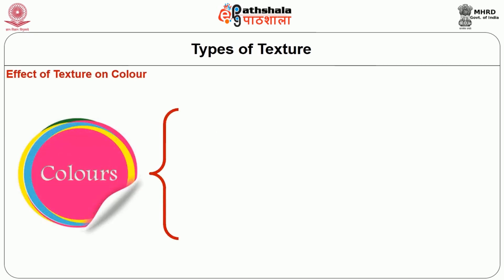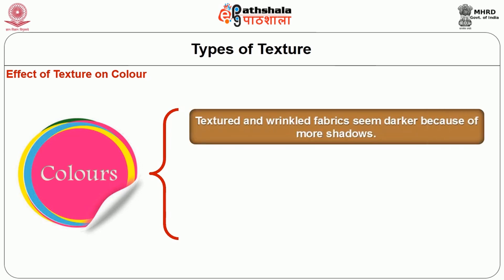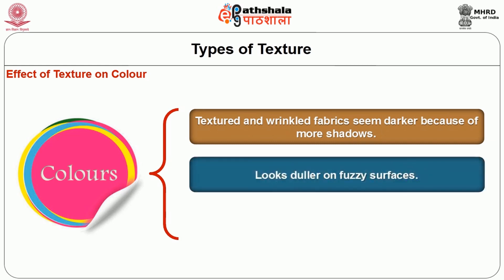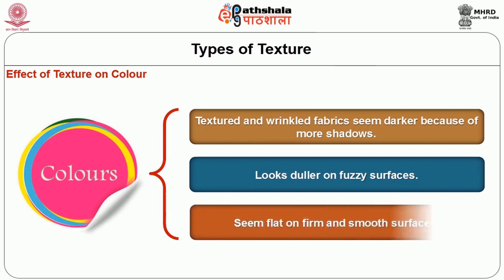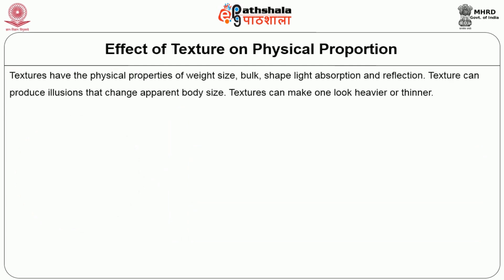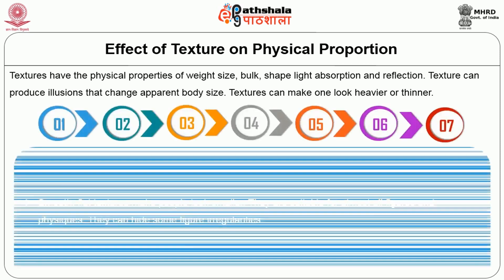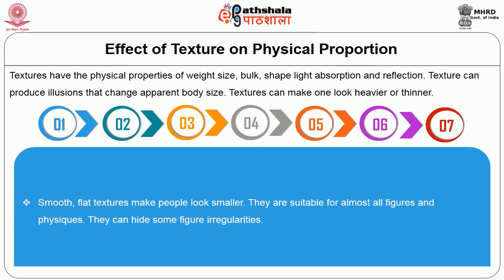Colors also change the texture of the fabric. Colors from textured and wrinkled fabrics seem darker because of more shadows. Colors on fuzzy surfaces look duller. Colors on firm and smooth surfaces seem flat. Now let us see the effect of texture on individual physical proportions. Textures have the physical properties of weight, size, bulk, shape, light absorption and reflection. Textures can produce illusions that change apparent body size. Textures can make one look heavier or thinner. Smooth and flat textures make people look smaller. They are suitable for almost all figures and can hide some figure irregularities.